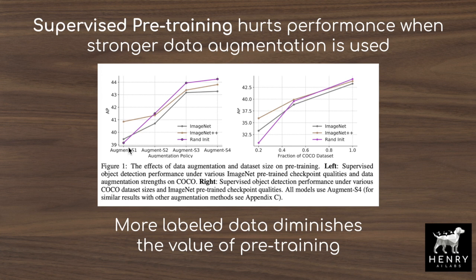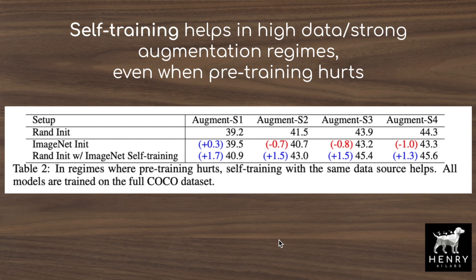At small-scale augmentation such as simple flipping, EfficientNet with 87% accuracy performs better than random initialization. But as augmentation scales up, random initialization performs better. Furthermore, when increasing the amount of labeled data for fine-tuning, supervised pre-training becomes essentially useless. With only 20% of the labeled COCO dataset, the higher-accuracy ImageNet backbone still provides benefit, but once more data is added, all supervised pre-training lines converge and random initialization performs comparably or better.